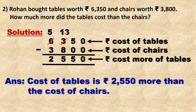In thousands place: 5 minus 3 is 2. The answer is 2,550 rupees. The final answer is the cost of tables is rupees 2,550 more than the cost of chairs.